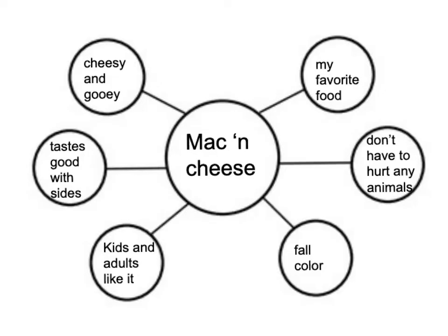I shared with you on Tuesday that if we didn't have turkey as the main dish, I would want mac and cheese to be the main dish. And I gave you some reasons why. I said it's cheesy and gooey. It tastes good with sides. Kids and adults like it. It's a fall color. You don't have to hurt any animals because there's no meat in it. And it's my favorite food.